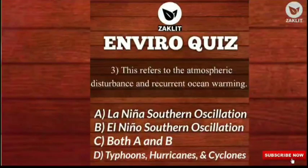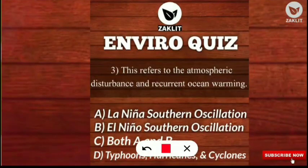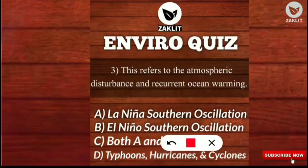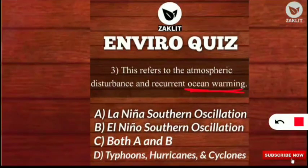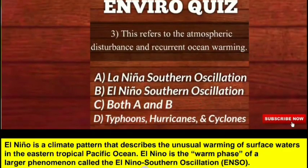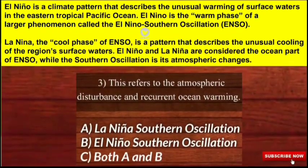Question 3: all participants gave the wrong answer to this question. The question refers to atmospheric disturbance and recurrent ocean warming. Most of you answered 'both El Niño and La Niña,' which is not correct. The correct answer is El Niño Southern Oscillation (ENSO). The warming phase is El Niño and the cool phase is La Niña. These are very frequently asked questions in environmental science entrances.